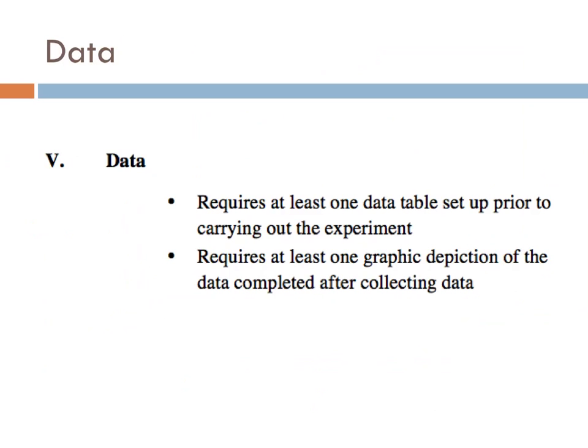The data section of the lab report, Roman numeral number five, should be produced during and after the experiment. There are two required components: first, you need at least one data table to record data during your experimentation. Then, when you finish collecting data after the experiment is finished, you need to produce an appropriate graphic to exhibit your data visually. There is a separate video that outlines different types of graphs and their proper form.